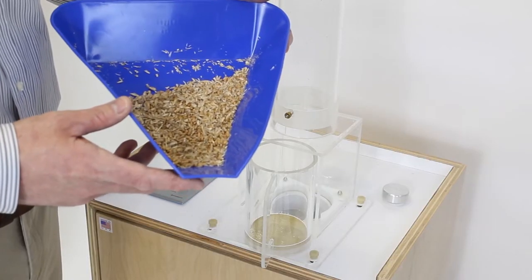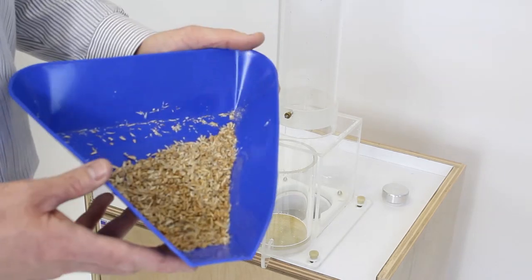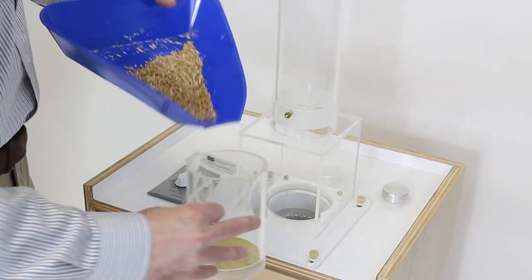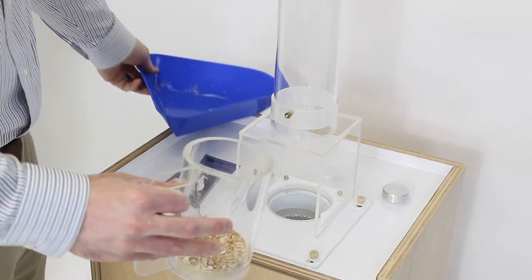Our sample is spelt with some of its chaff and dust and debris mixed in. We're going to take that sample and place it into our lower cup on the 757-RC tube set.